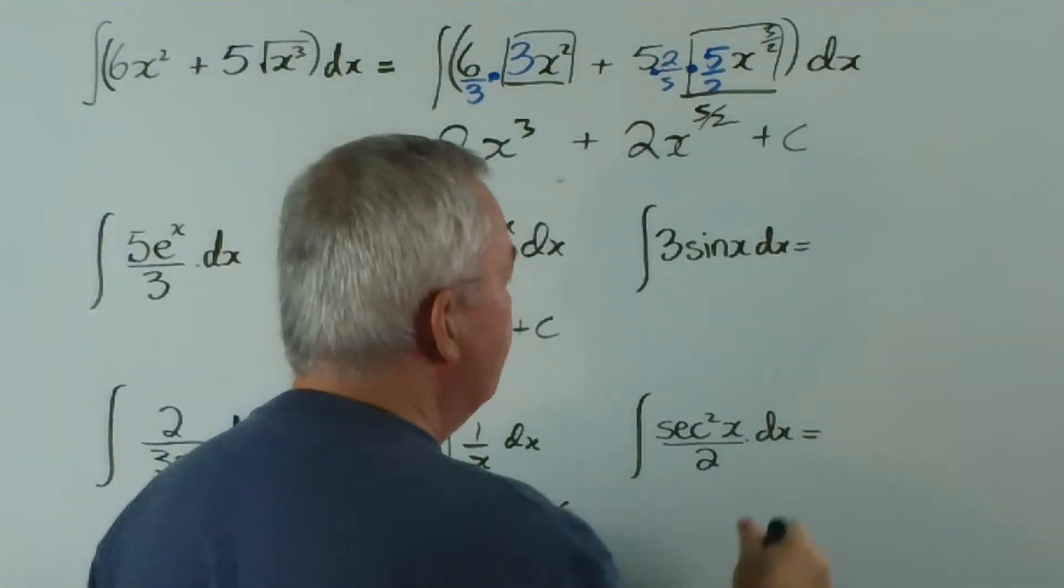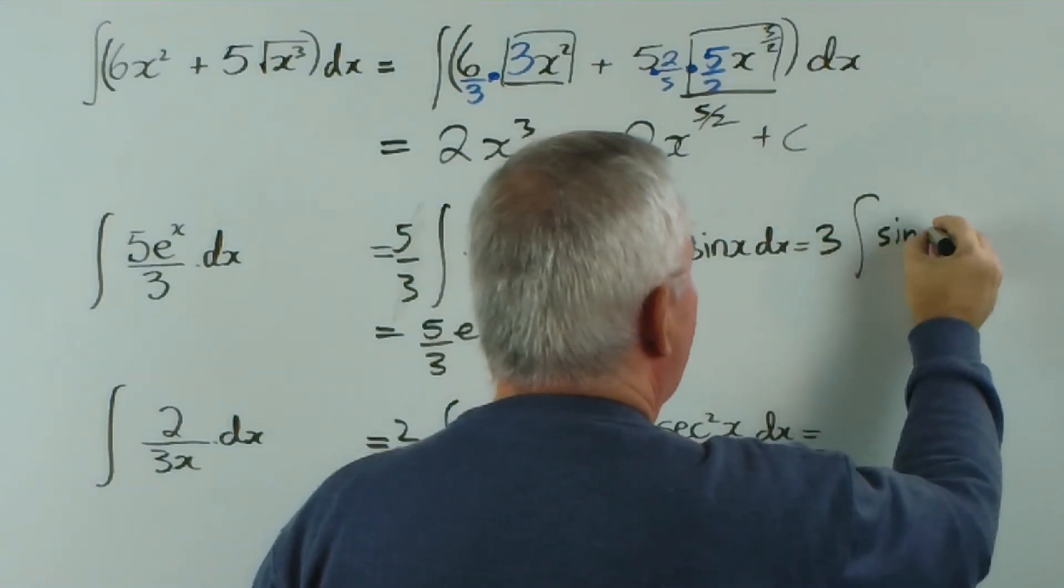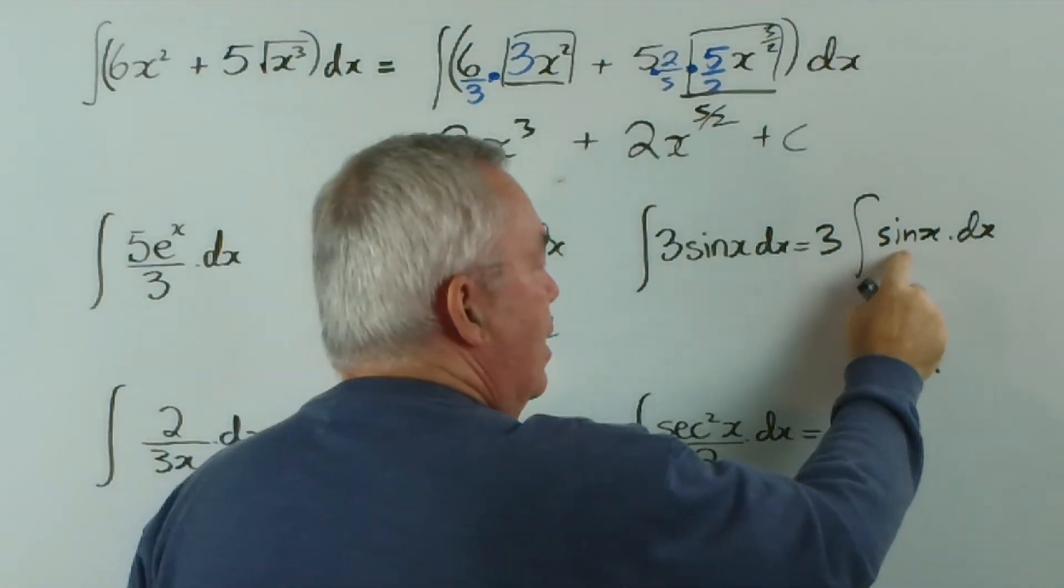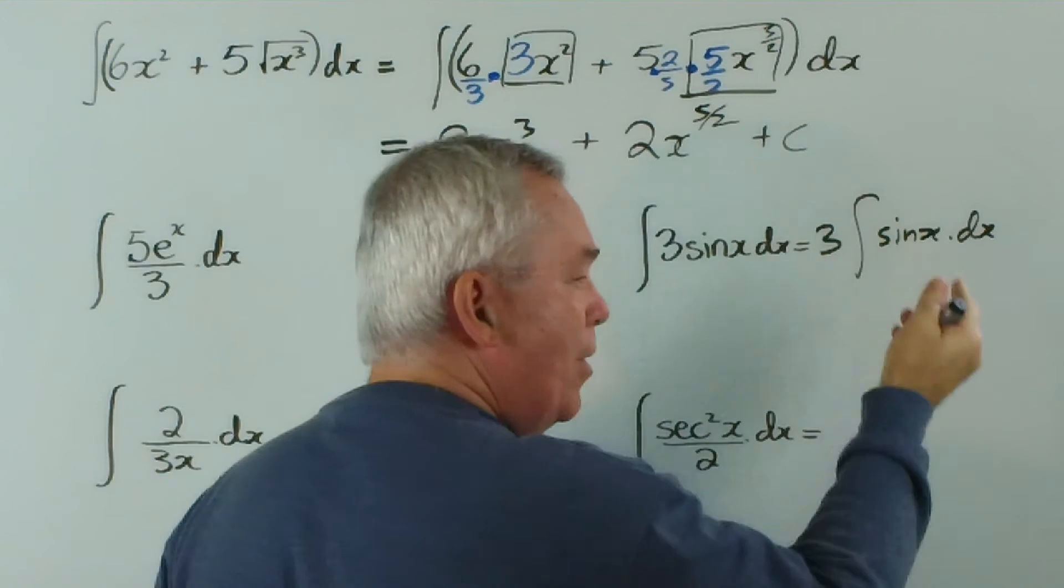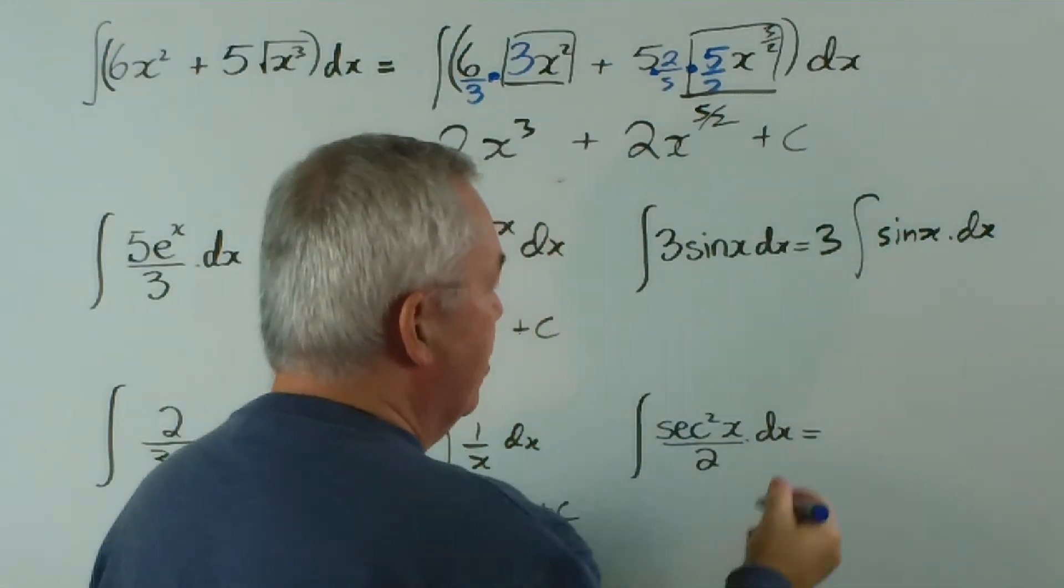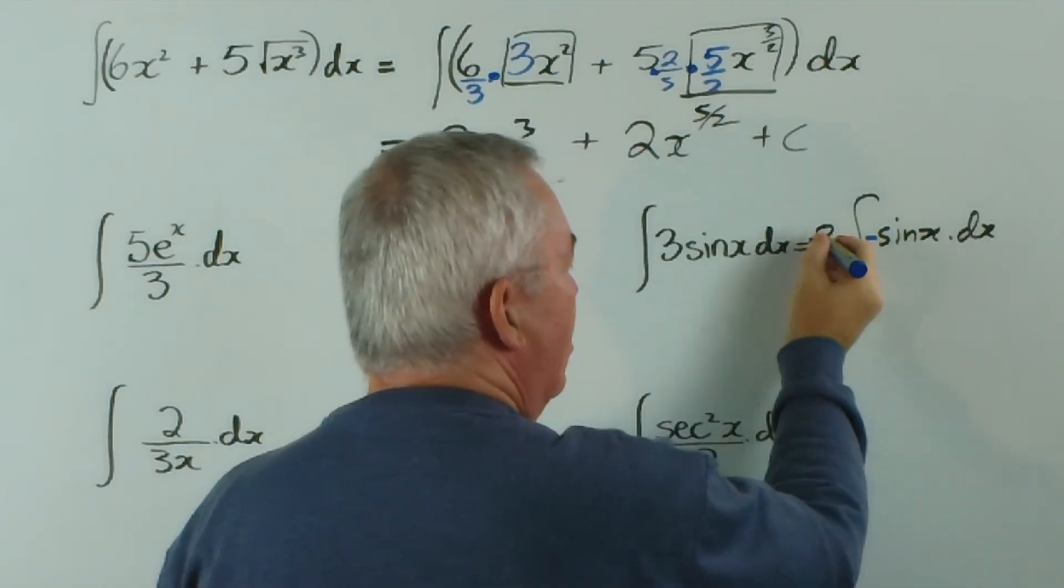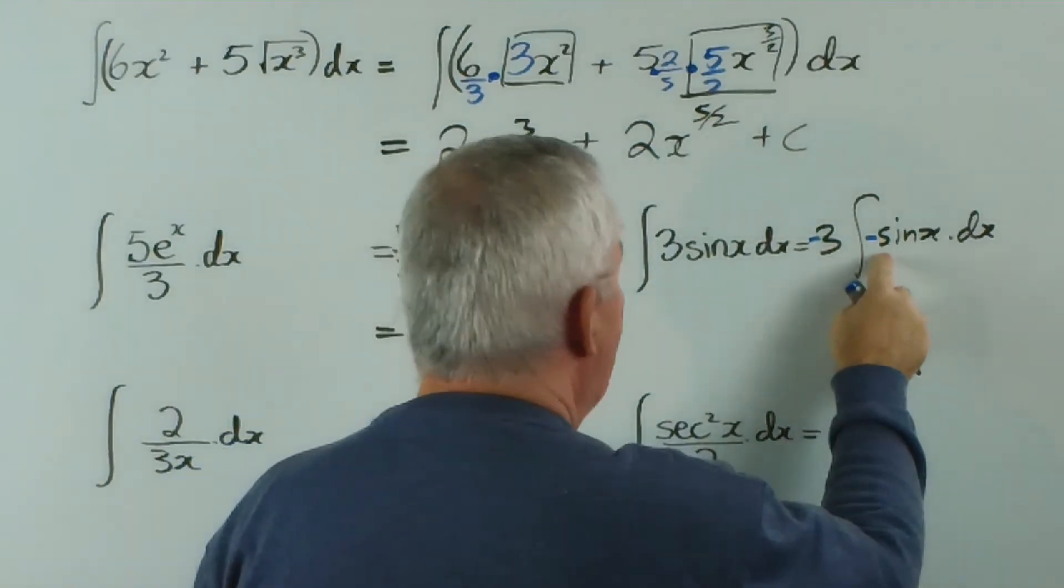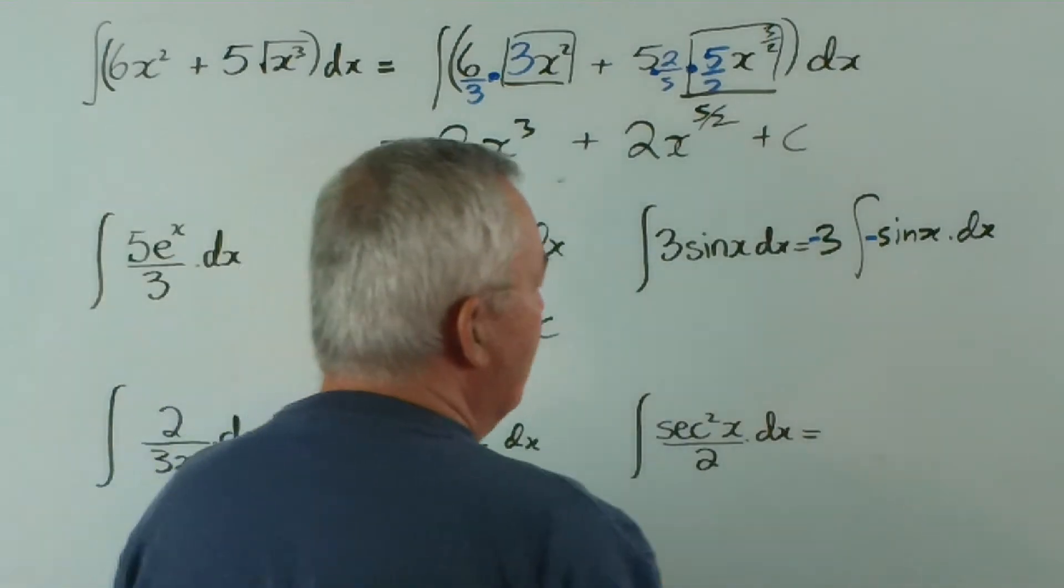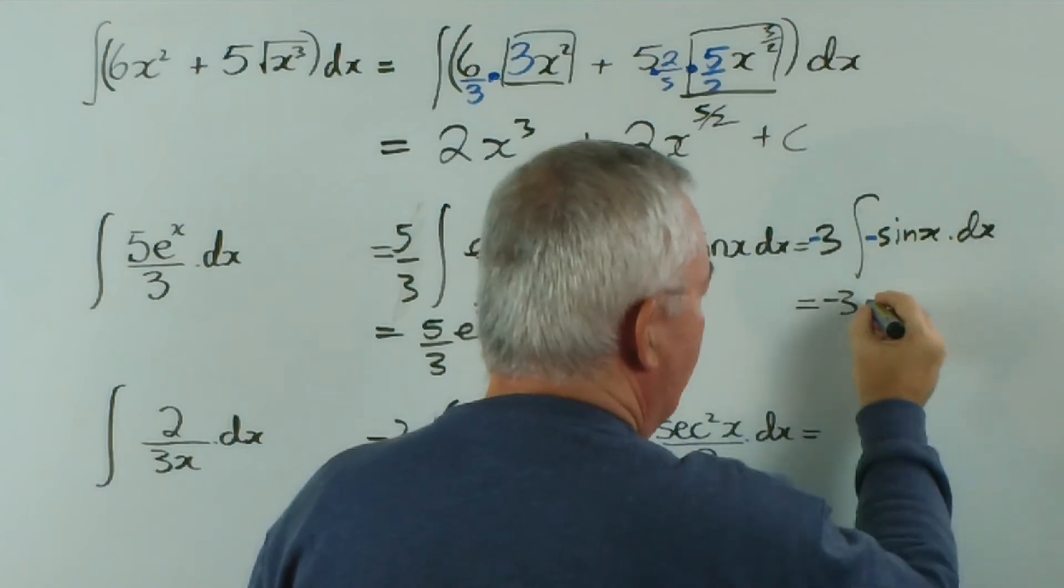This one, move the three outside. Is that a pure integral? No, the derivative of cosine is minus sine, or negative sine, so I need a negative sine here. And to compensate, I make the coefficient out the front negative as well, so the two negatives make a positive, and that would leave negative three. Integral of this, this is a pure integral now, cos x plus c.